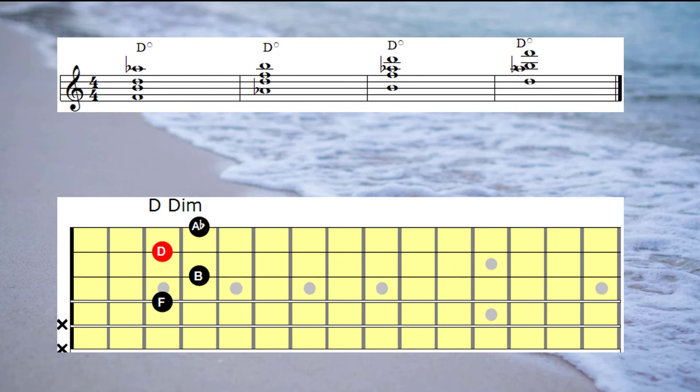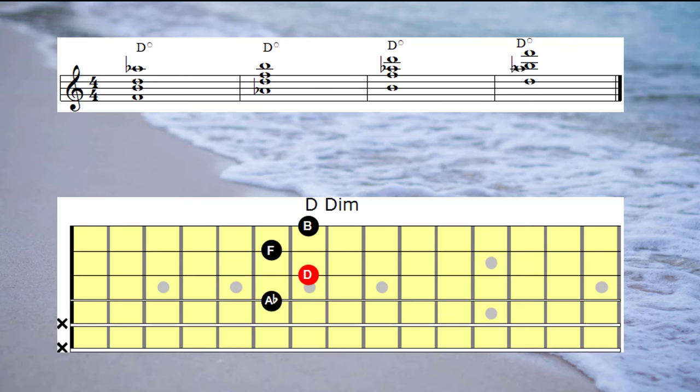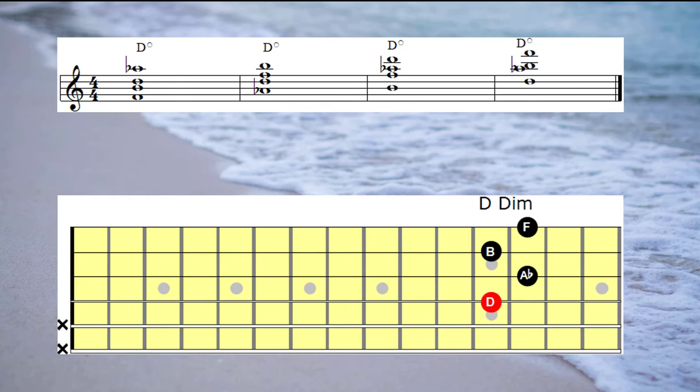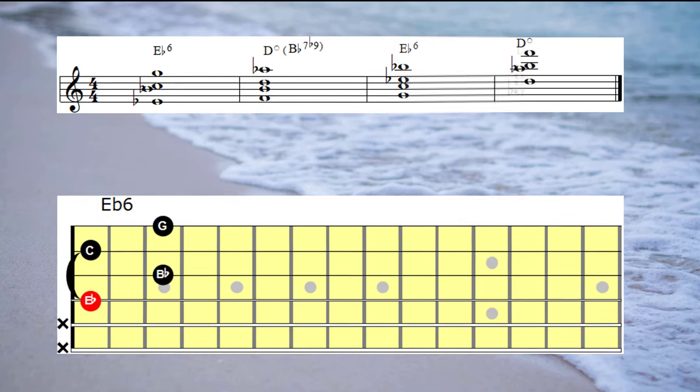D-diminished 7th chord on the first four strings. Now it's time to play the whole scale combining the Eb 6th with the D diminished 7th chord.